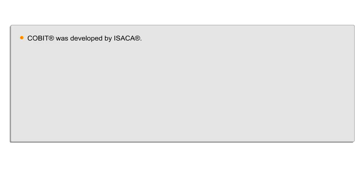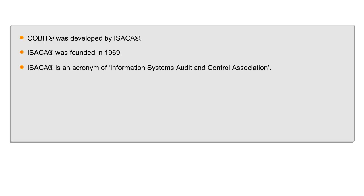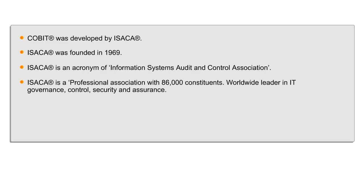COBIT 5 has been developed and is maintained by ISACA as well as industry experts, control and security professionals. Its content is based on ongoing research into IT good practice and is continually maintained, providing an objective and practical resource for all types of users. ISACA was founded in 1969, known as the Information Systems Audit and Control Association, now referred to as ISACA, with an aim to provide thought leadership and guidance on directing and controlling an enterprise's information technology. It has over 85,000 members in about 140 countries.